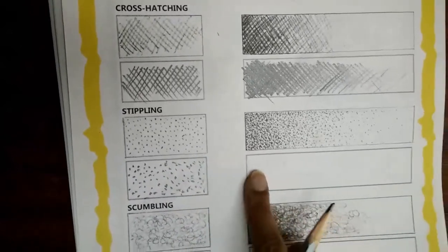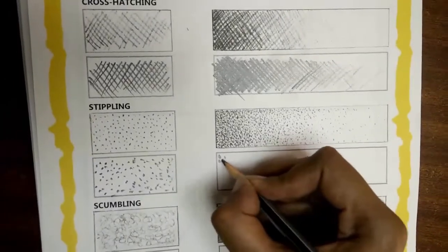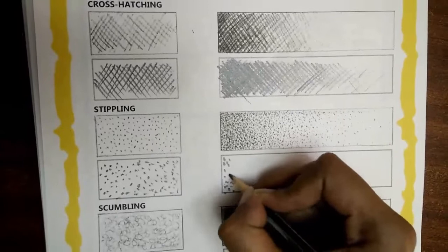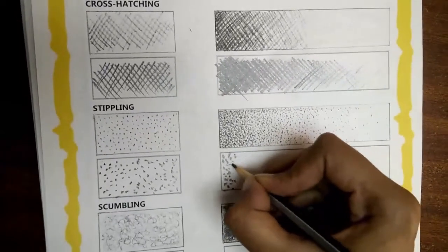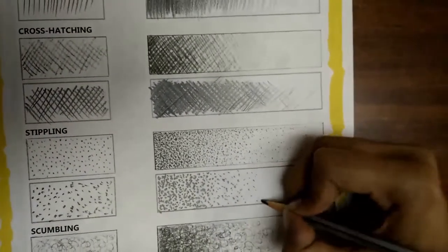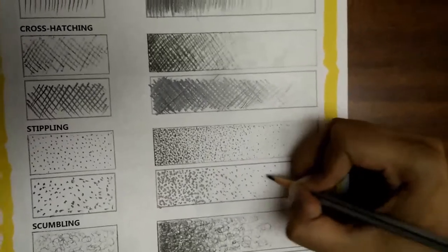To make a value scale with stippling, you have to remember that the dots have to be close to each other for the darker tones. And as you move towards the lighter shade, your dots become sparse and light.